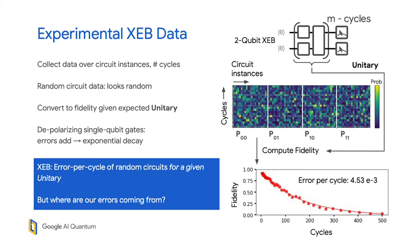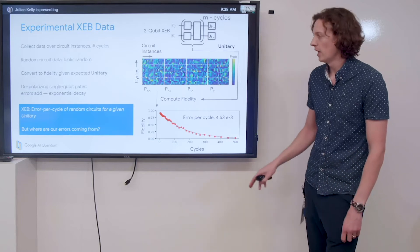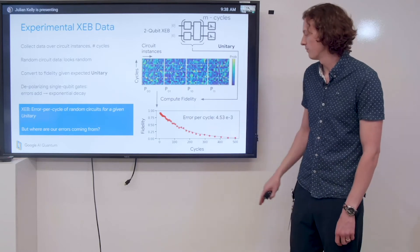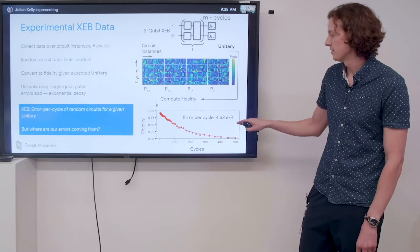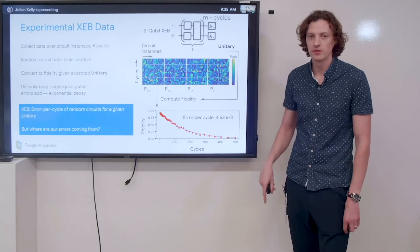The way this works is by choosing depolarizing single-qubit gates, the errors more or less add up, and we get this exponential decay. We can fit this and extract an error per cycle for our XEB sequence, an error per cycle given some expected unitary evolution.